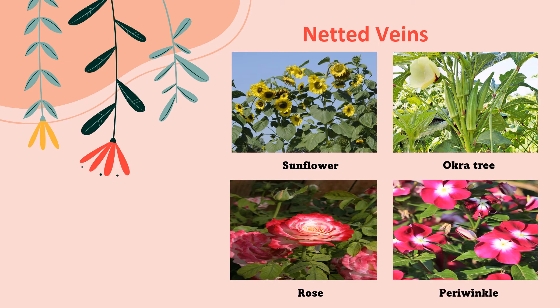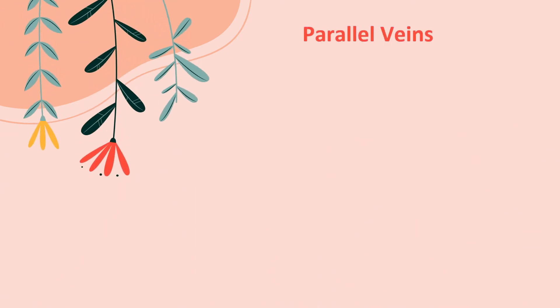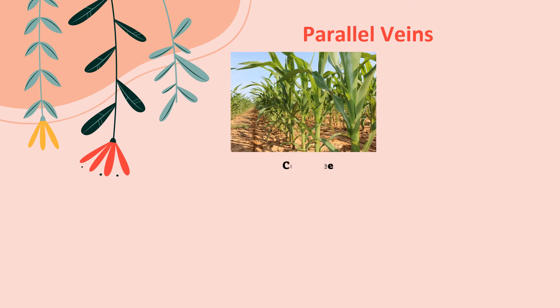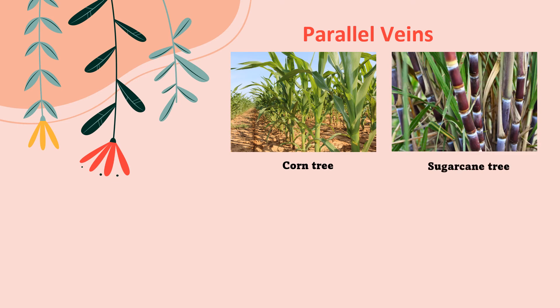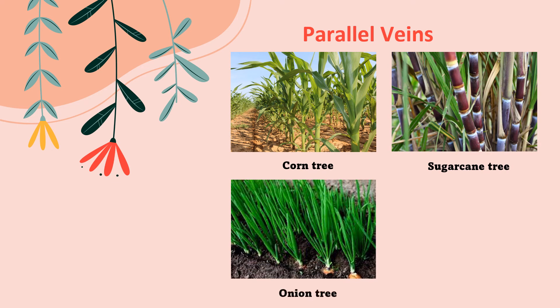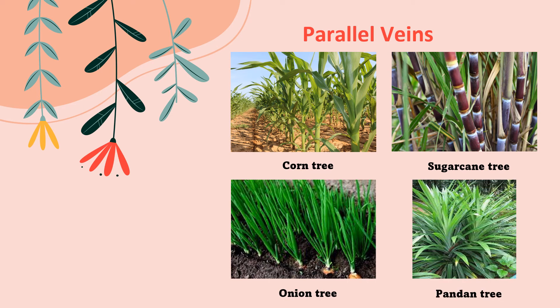Let us look at plants with netted veins and parallel veins. Examples of plants with parallel veins are: corn, sugar cane, onion, and pandan.